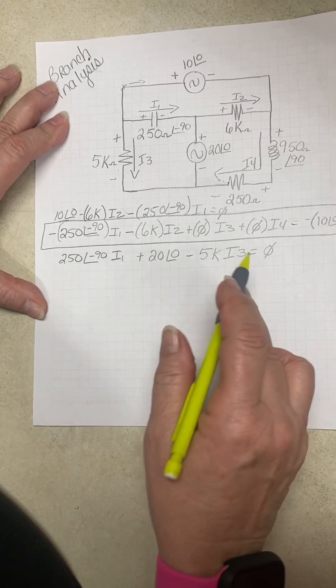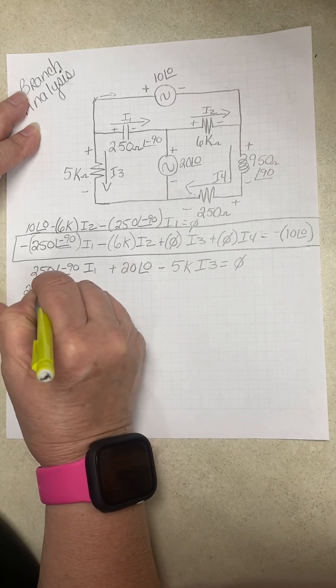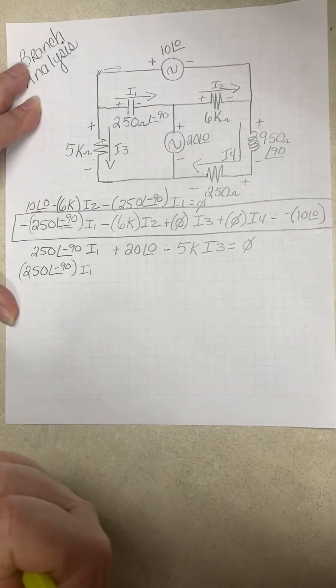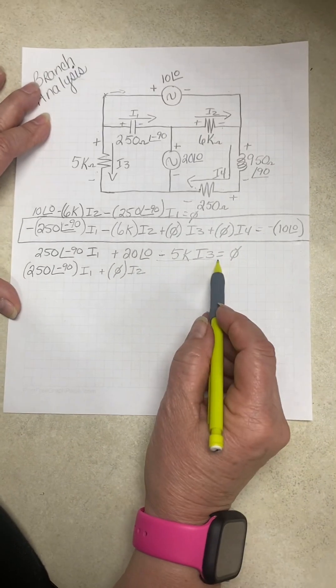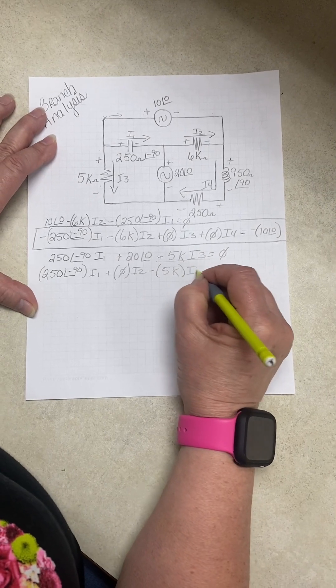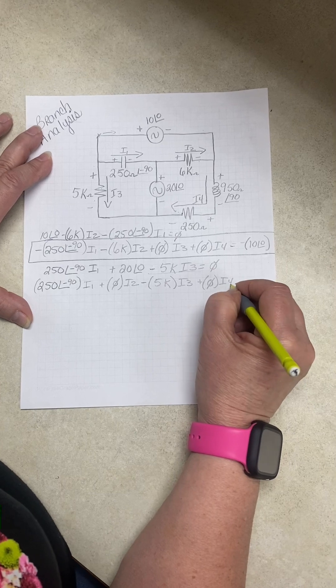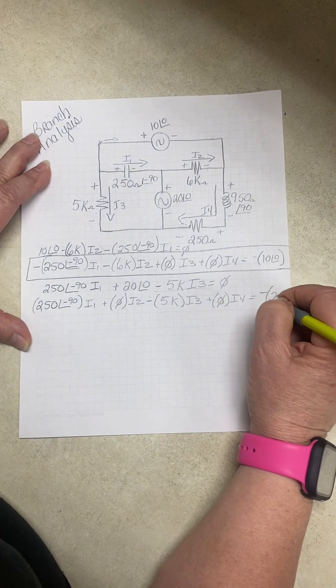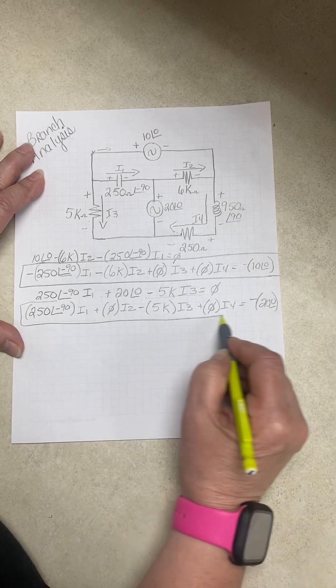We have I1 and three, so two and four are going to be zero. So we have positive 250 at negative 90, I1 plus 0 I2, minus 5K I3 plus 0 I4 equals, because this voltage has to go to the other side, it becomes negative 20 at zero. That's our second equation.